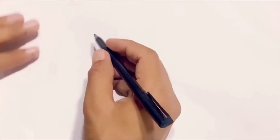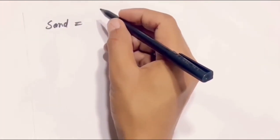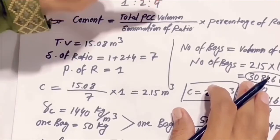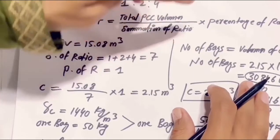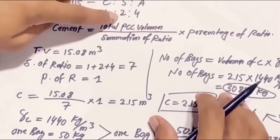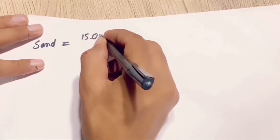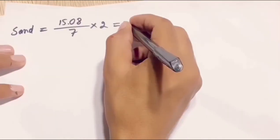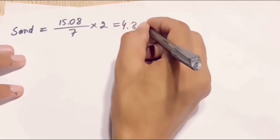We will calculate the sand quantity using the same formula. Sand = total PCC volume ÷ summation of ratio × percentage of sand ratio, which is 2. So sand = 15.08 ÷ 7 × 2 = 4.3 cubic meters. This is the volume of sand required.